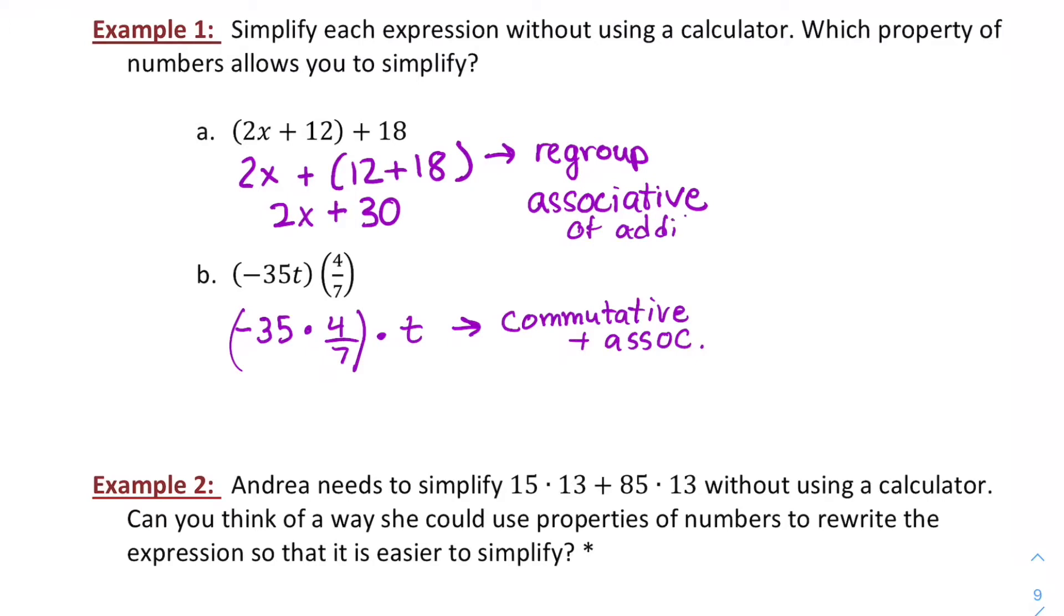I should specify on part A, that was the associative property of addition. And on part B, these are of multiplication. So I can go ahead and multiply my negative 35 times my 4 sevenths and get negative 20 times T.